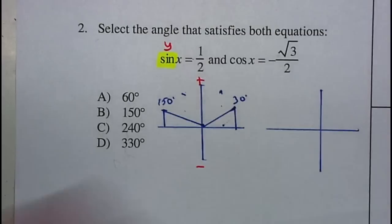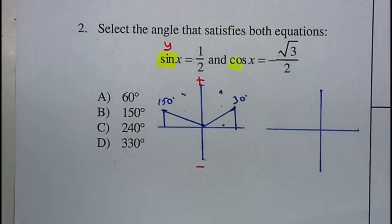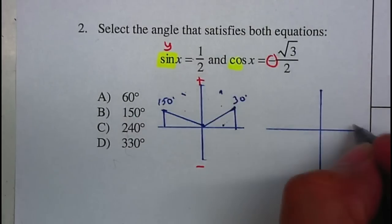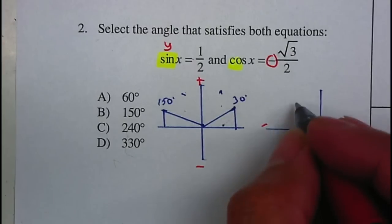Now, for cosine, cosine is your x. Your x value has to be negative. This is positive, that's negative, so it has to be on either those two quadrants, quadrants two or three.